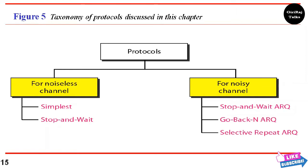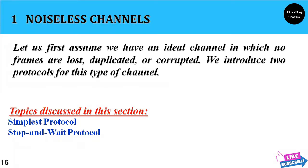Bi-directional protocols are more complex than unidirectional ones. For noiseless channels, we first assume an ideal channel in which no frames are lost, duplicated, or corrupted. We introduce two protocols for this type of channel: the first does not use flow control, and the second does. Neither has error control because the channel is a perfect noiseless channel. In this topic, you will learn about the simplest protocol and the stop-and-wait protocol.